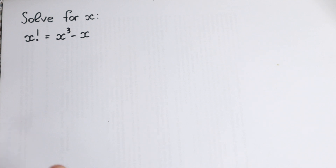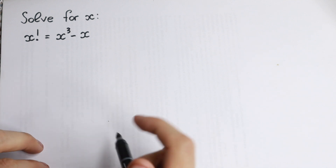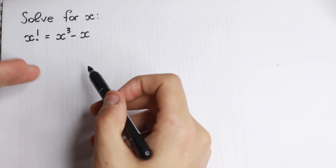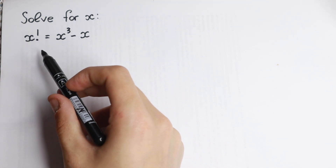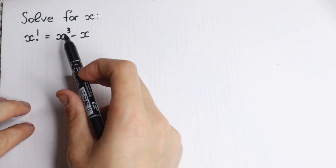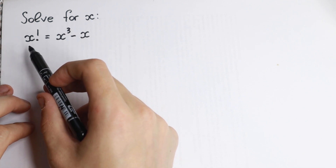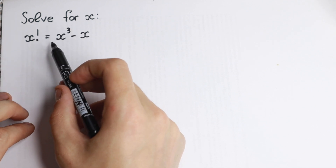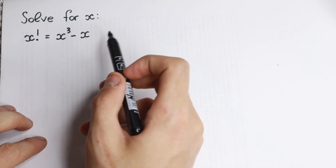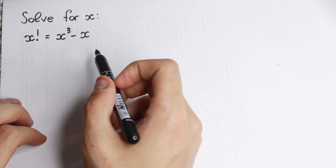Hello everyone! We have a really interesting equation today — a factorial problem to solve. We have a cube as well: x factorial equals x cubed minus x.